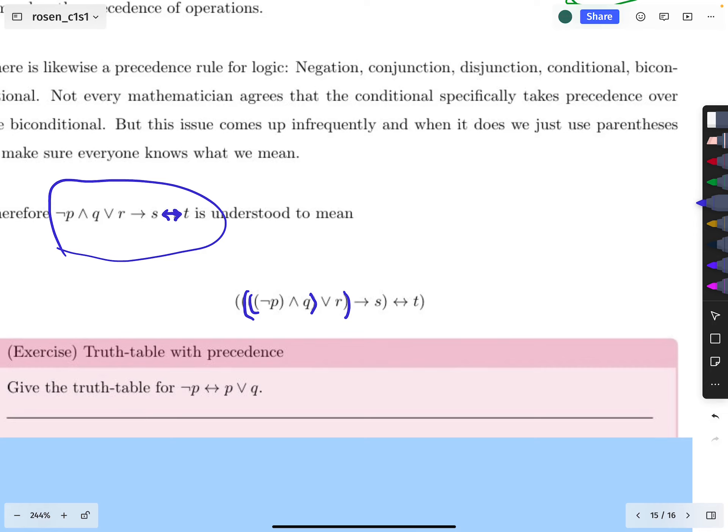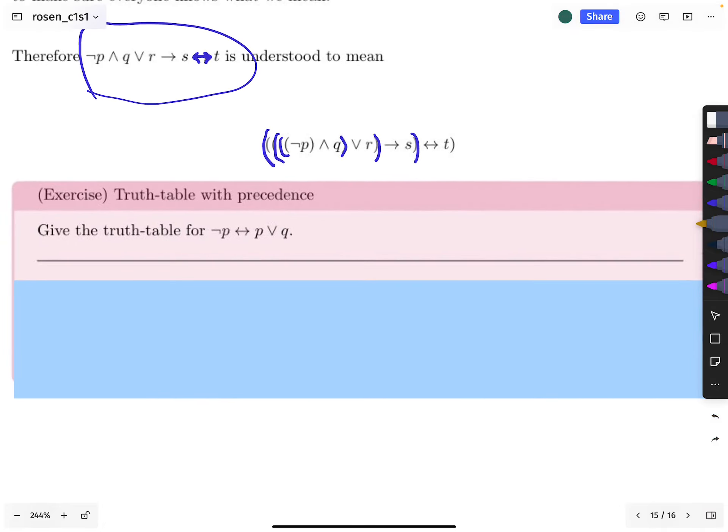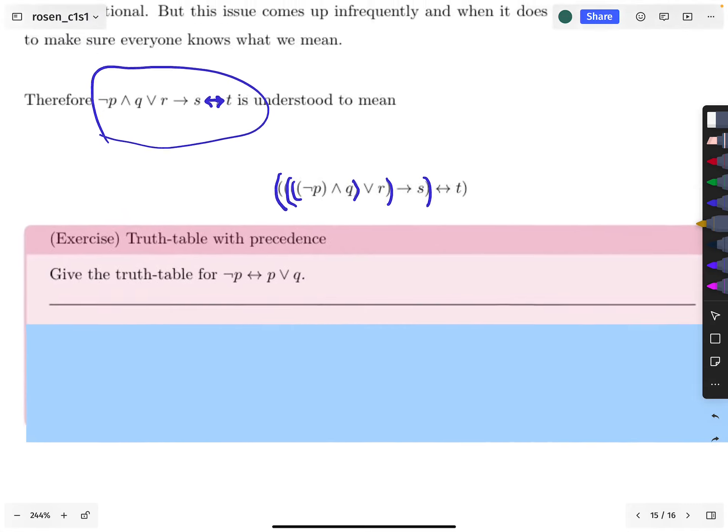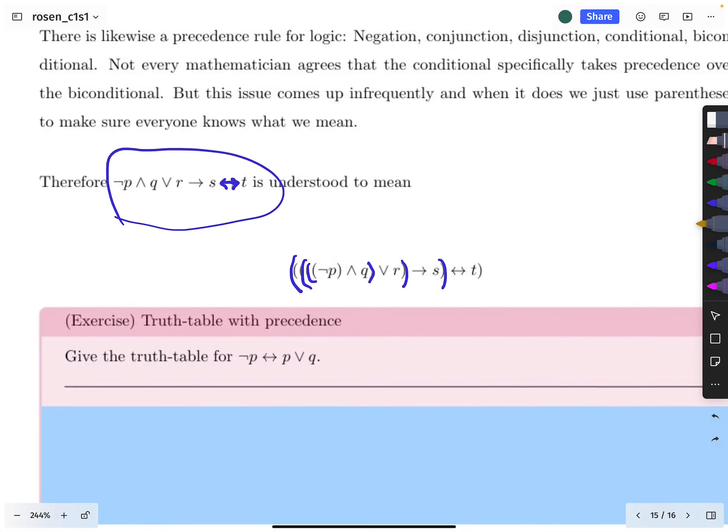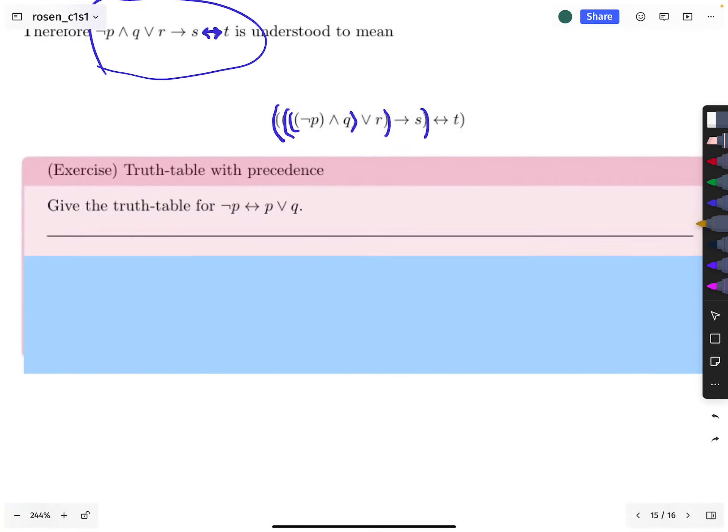So then you could put parentheses like that to help the biconditional to see that the whole left-hand side is on the left, you know, for the biconditional. So, okay. Anyway, so that's the whole idea of the precedence rules for our logical operators. So, right, the important thing is that it goes negation, conjunction, disjunction, conditional, blah, blah, blah. So, here's an exercise. Let's give the truth table for this expression and notice that in order to parse it correctly, you have to use the precedence rules.